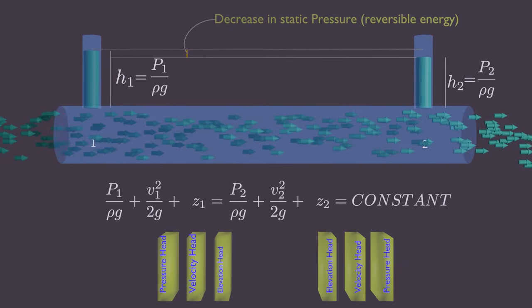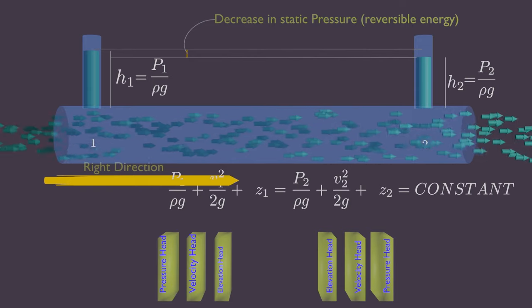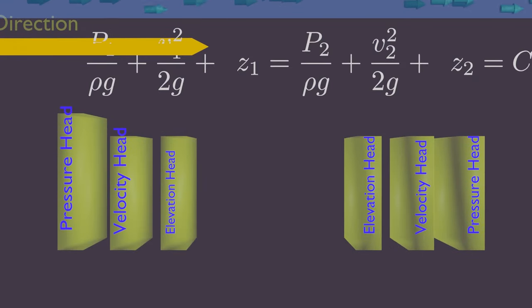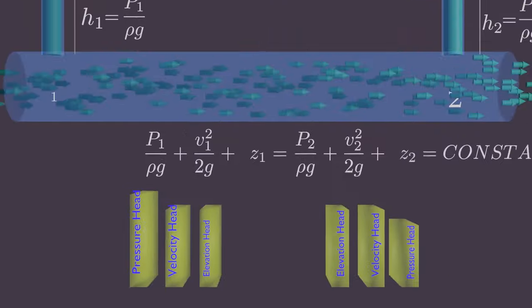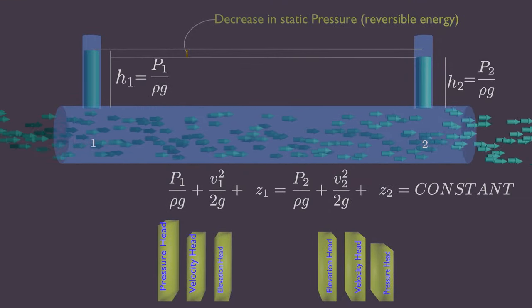So for fluid to flow in the right direction, the pressure at point 1 should be greater than pressure at point 2.